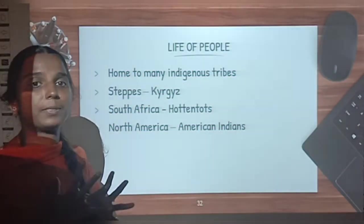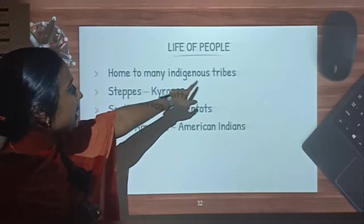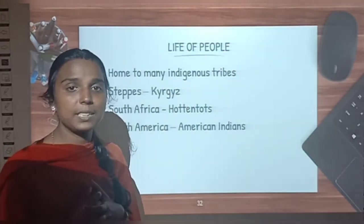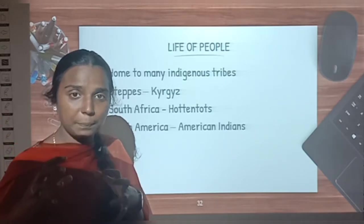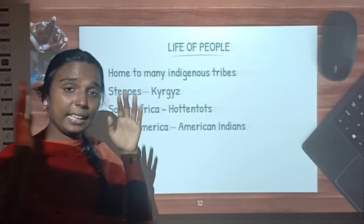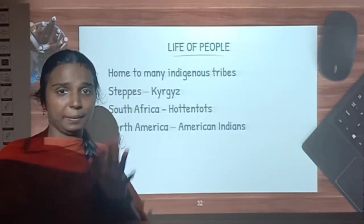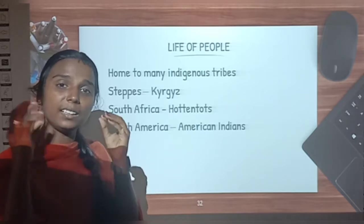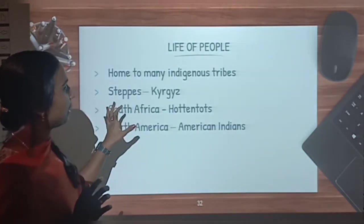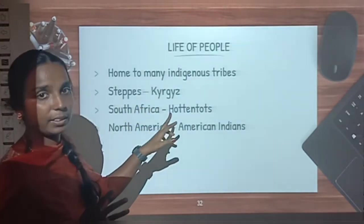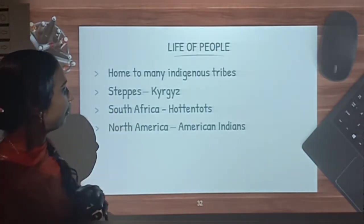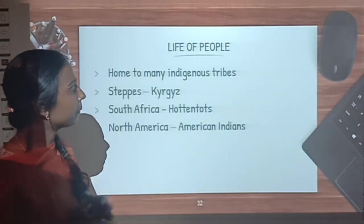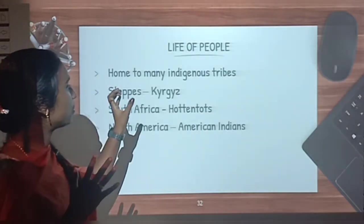Now let us see the tribes. These grasslands are home to many indigenous tribes. Indigenous tribes means they are not people who migrated from somewhere else — they belong to those grasslands from the very beginning; they are not migrants. In the steppes the tribes are known as Kyrgyz. In South Africa the tribes are known as Hottentots. And in North America they are known as American Indians. These temperate grasslands are home to many indigenous tribes.